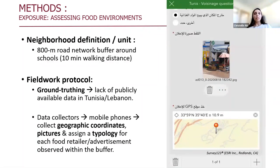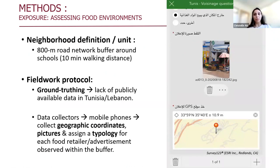Food observation is considered the gold standard to document food exposures in neighborhoods. Data collectors worked within the 800-meter buffer and were given mobile phones. We asked them to collect geographic coordinates and pictures, as well as to assign typology for each food retailer and advertisement observed within the buffer, using an application called Survey123 downloaded on their mobile phones.